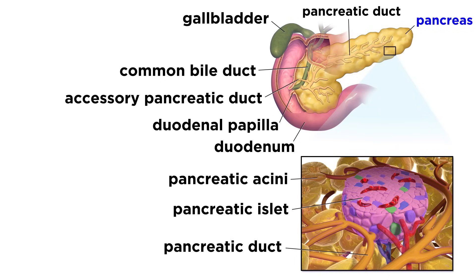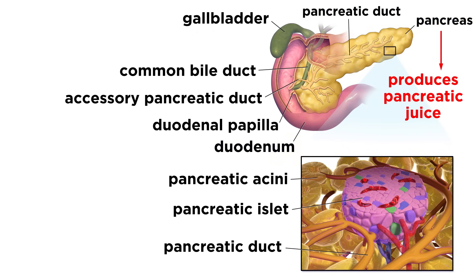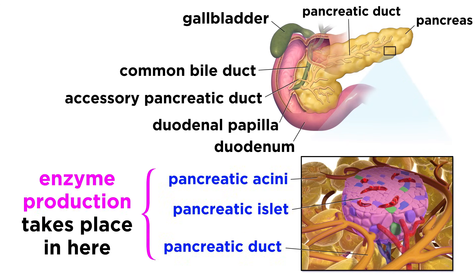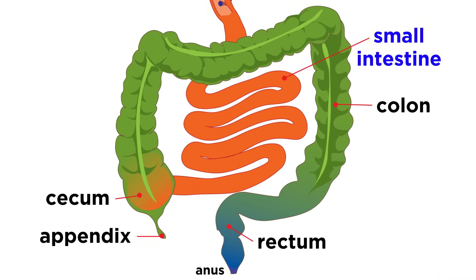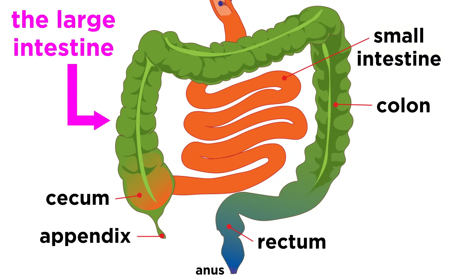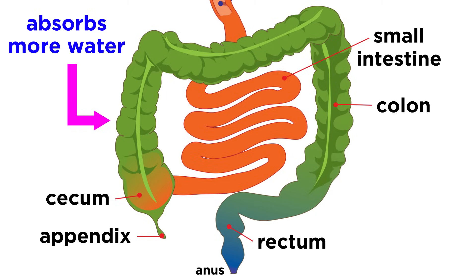Moving on to the pancreas, this is a large gland attached to the duodenum via the main pancreatic duct, and it produces pancreatic juice, which contains a wide variety of enzymes that help break down food. We can see clusters of acinar cells surrounding ducts. This is where enzyme production takes place. And lastly, once food has made it all the way through the small intestine, almost all of the water and nutrients have been absorbed, and what remains is more or less indigestible once it enters the large intestine, which frames the small intestine on three sides. This serves to continue absorbing more water from these food residues, and also compact them into fecal matter, which is eliminated from the body through the anus.